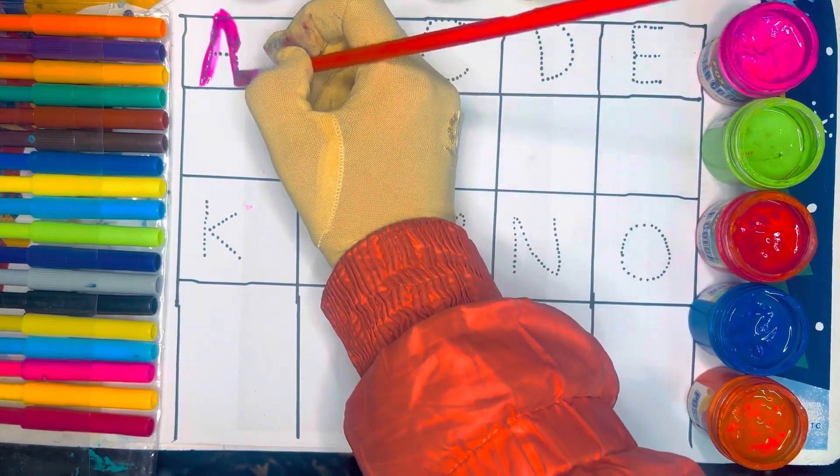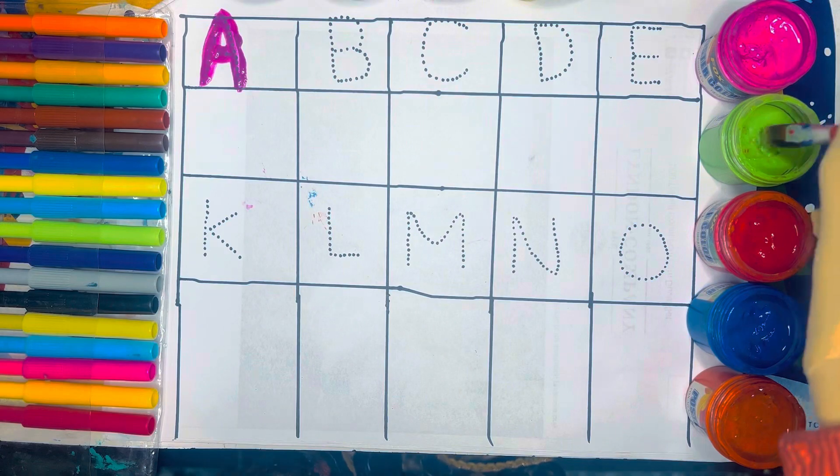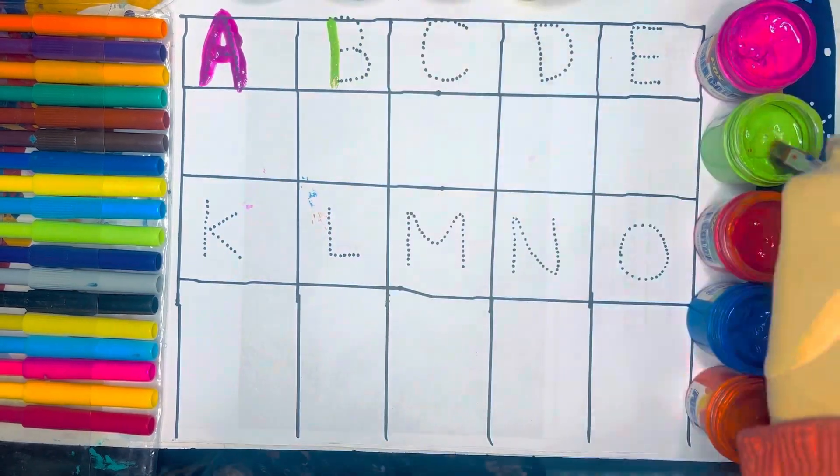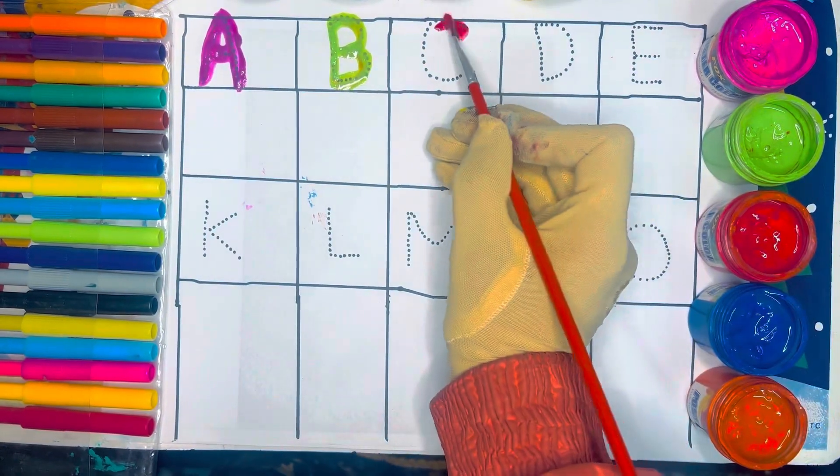A, A for apple, green color. B, B for ball, red color.